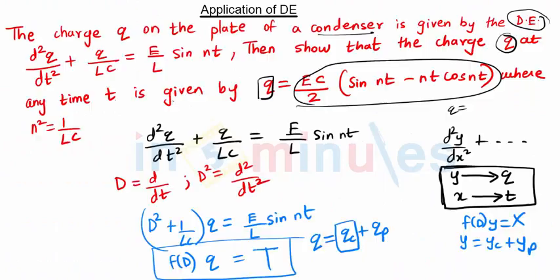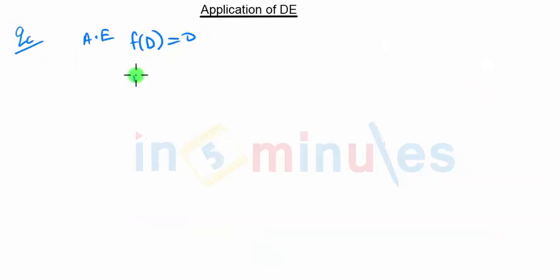To find qc we need an auxiliary equation which is given by f(D) = 0. What is f(D)? f(D) is this term, which is D². So f(D) is D² + 1/LC = 0. So D² is minus 1/LC.